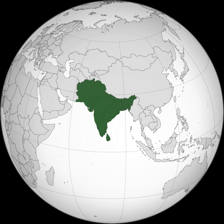The current territories of Afghanistan, Bangladesh, Bhutan, Maldives, Nepal, India, Pakistan, and Sri Lanka form South Asia. The South Asian Association for Regional Cooperation is an economic cooperation organization in the region, established in 1985, and includes all eight nations. South Asia covers about 5.2 million square kilometers, which is 11.71% of the Asian continent or 3.5% of the world's land surface area.